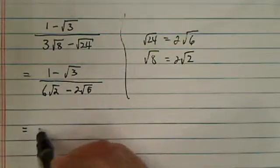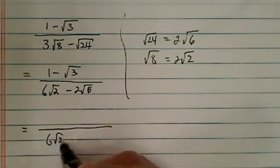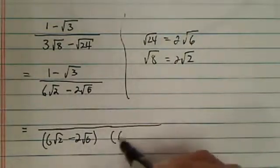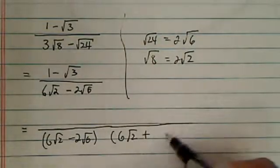In order to make the bottom become purely a number instead of an irrational number, we're going to multiply its conjugate, which happens to be a plus in there.